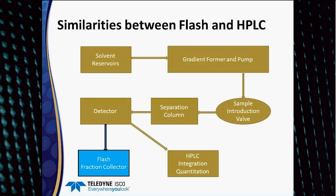After the detector is where the real difference occurs. In HPLC, the detector signal is fed to an integration package where the signal is integrated and quantitated. In flash chromatography, the fluid is fed to a fraction collector, and the detector signal is used to identify peaks and advance the fraction collector based on peak thresholds so that peaks can be separated into different tubes.